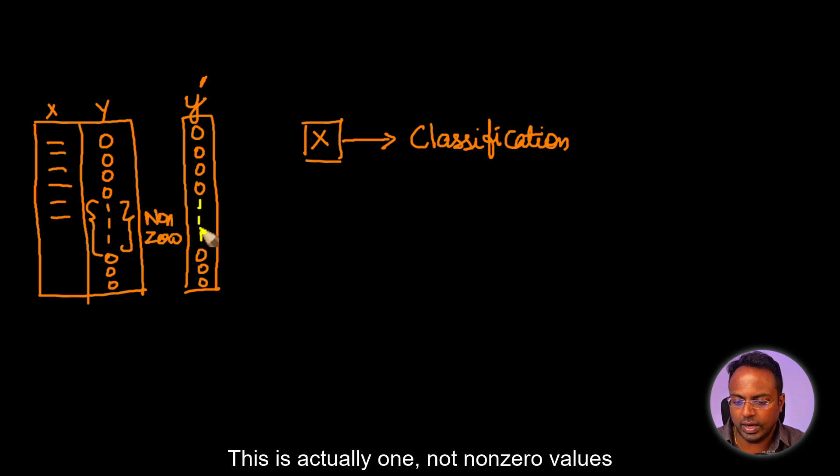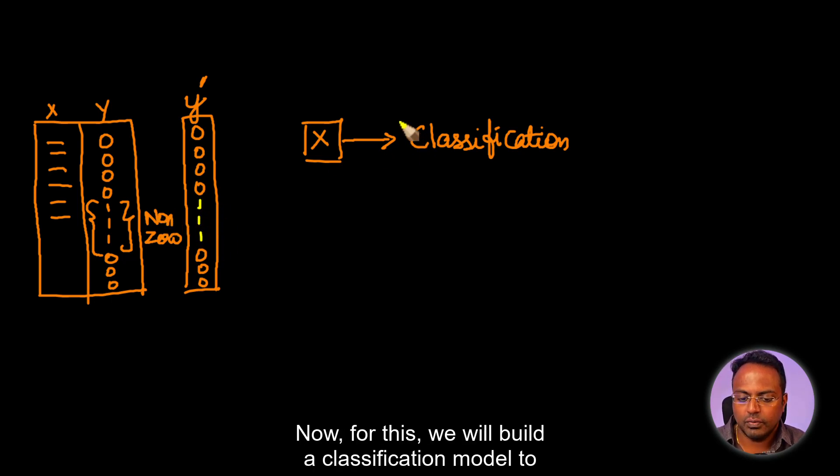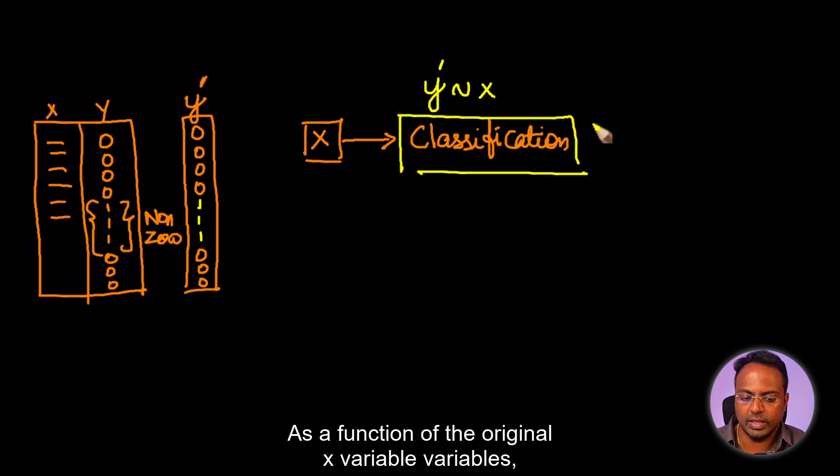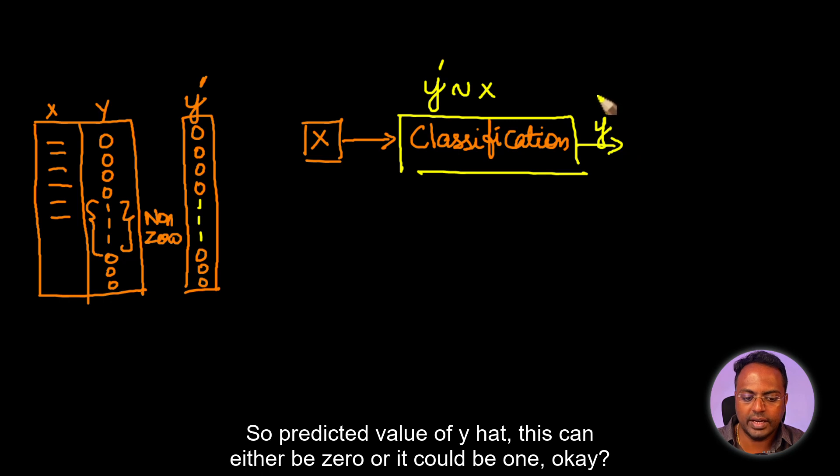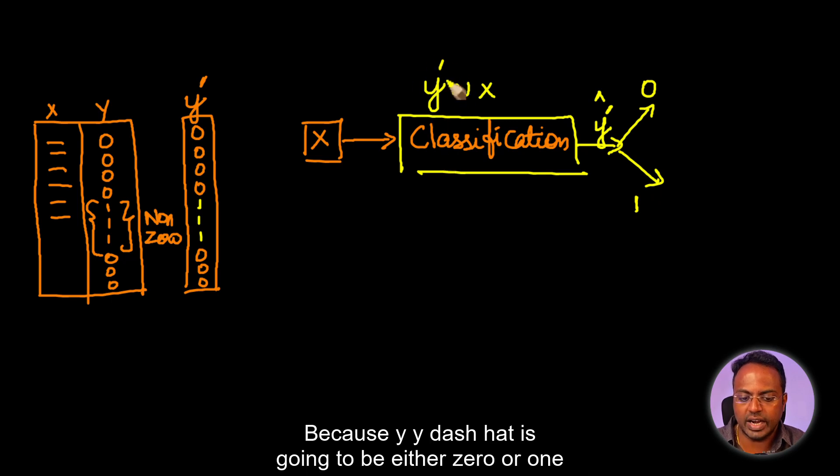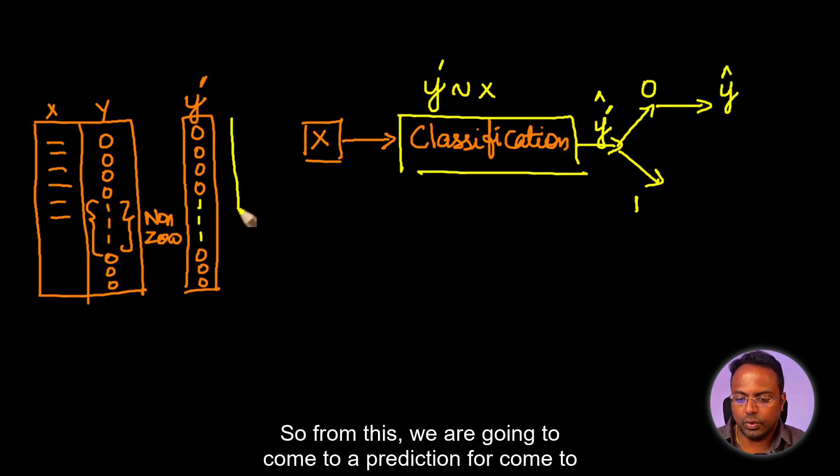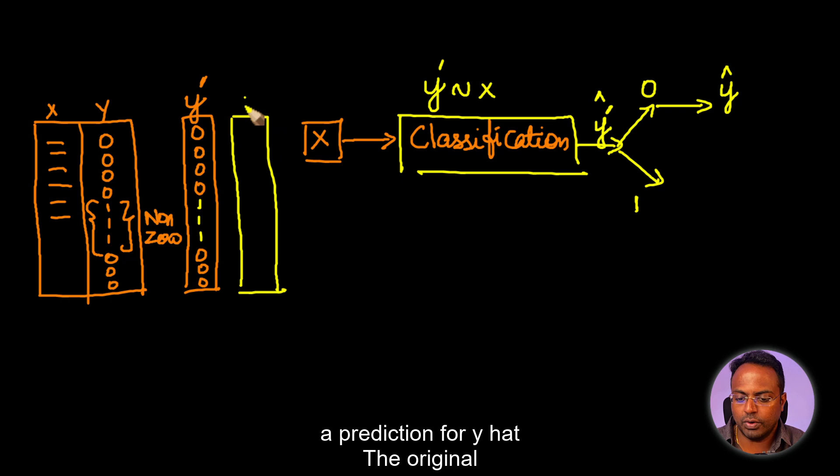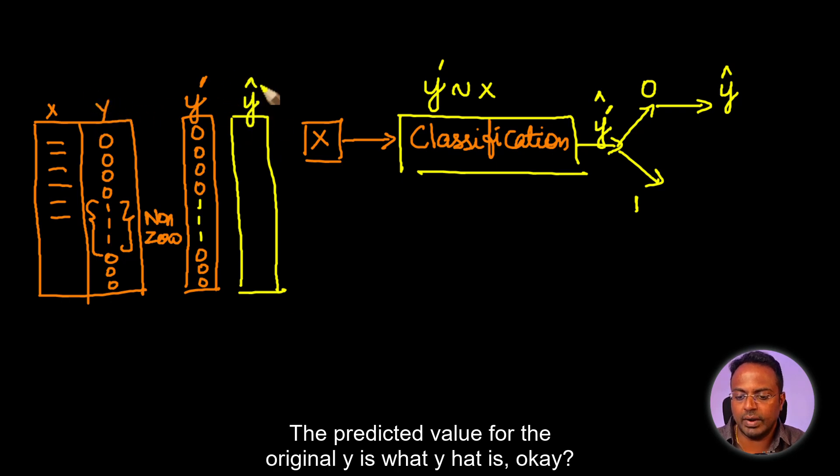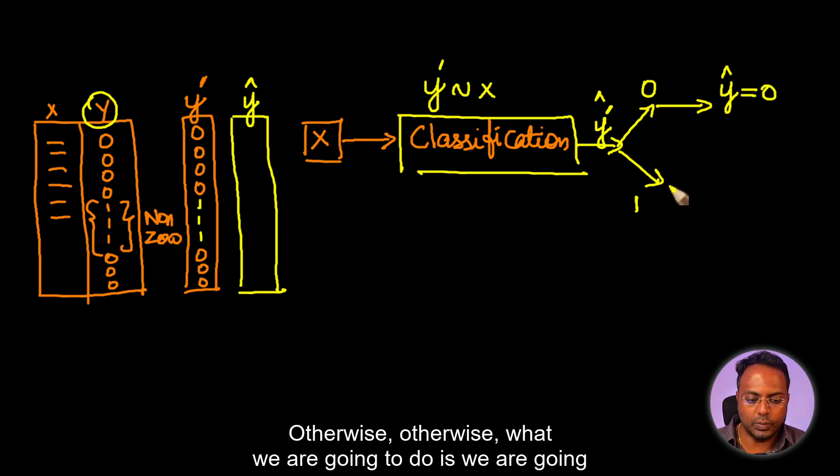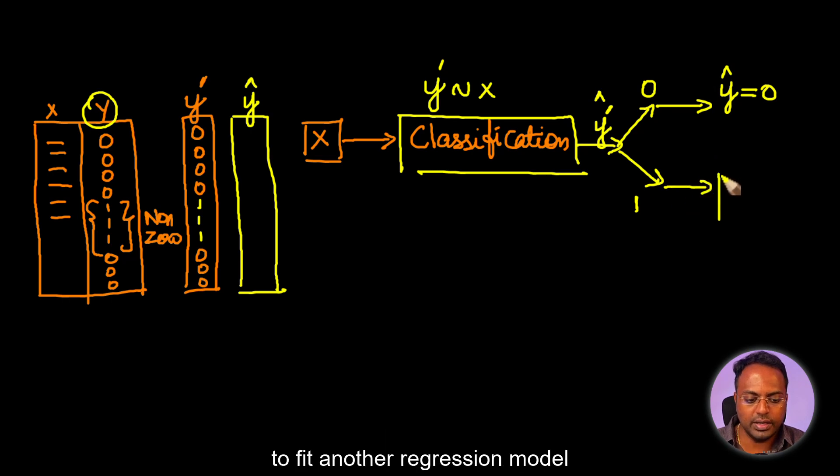Now, for this, we will build a classification model to predict Y dash as a function of the original X variables. We will get a prediction, the predicted value of Y dash hat. This can either be zero or it could be one, because Y dash hat is going to be either zero or one only. If it is zero, then the final predicted Y hat equals zero.